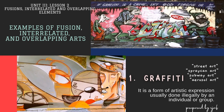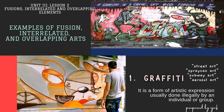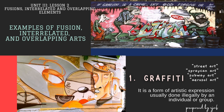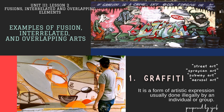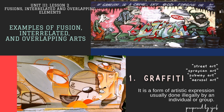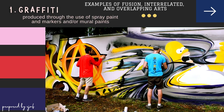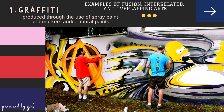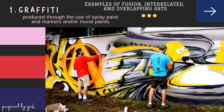We now go to examples of fusion, interrelated, and overlapping arts. The first one is graffiti, also called street art, spray can art, subway art, or aerosol art — a form of visual communication which could be written or drawings made on a wall or other surface. It is a form of artistic expression usually done illegally by an individual or group. Although stylistic in symbol or phrase spray painted on a wall, some are not gang related but an anti-social behavior seeking attention. But it is deemed an expressive art form, produced through the use of spray paint, markers, and/or mural paints.